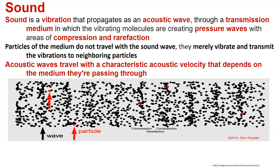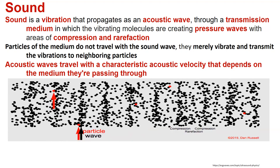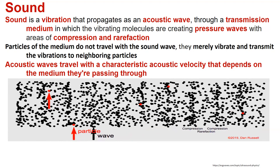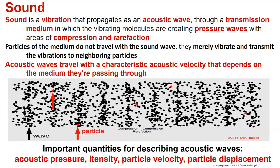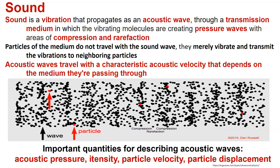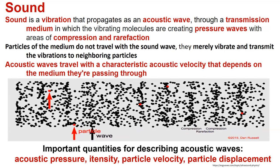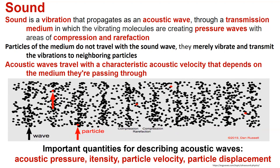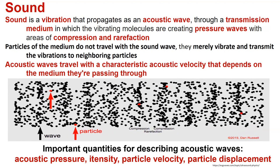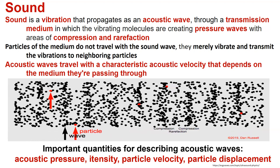Acoustic waves travel with a characteristic acoustic velocity that depends on the medium they are passing through. The important quantities for describing acoustic waves are acoustic pressure, intensity, particle velocity, and particle displacement.